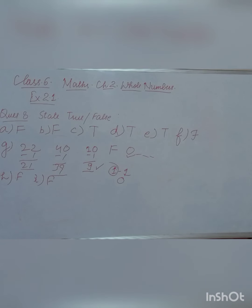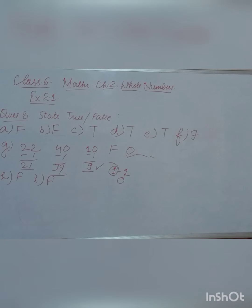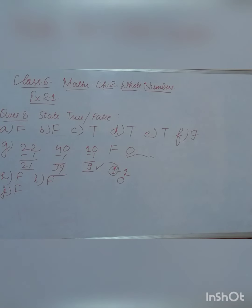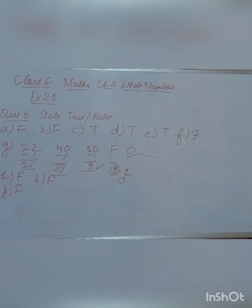The J part says: 'The whole number 1 has no predecessor.' Whole number 1 does have a predecessor. Since whole numbers start from 0, the predecessor of 1 is 0. So this statement is false.